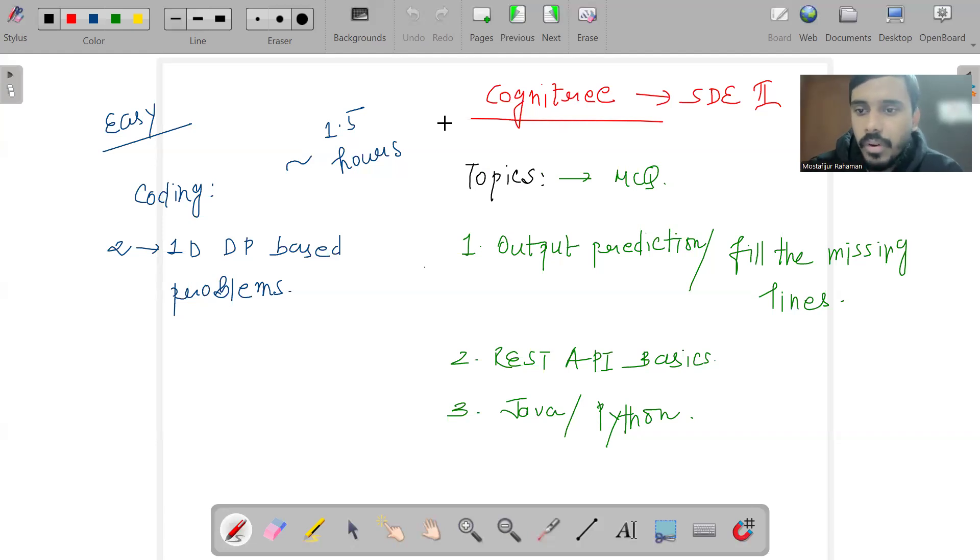In this particular exam conducted by Cognizant, there were aptitude or logical-based questions as well, apart from just coding-based MCQs. Then there were REST API basics - POST, GET, PATCH - similar method-based problems, and output predictions in Java and Python code snippets.